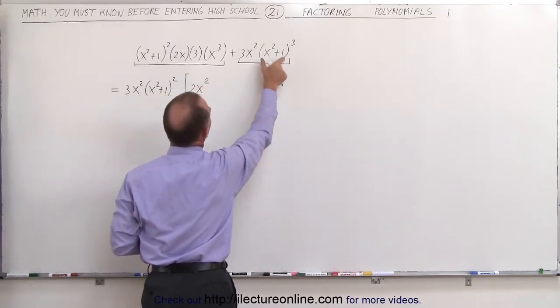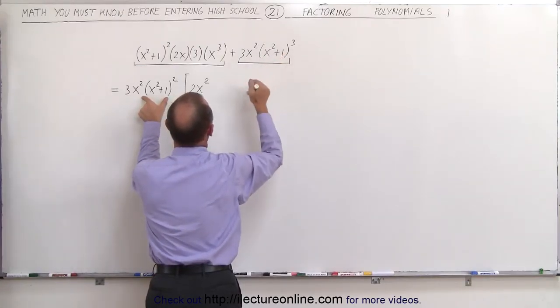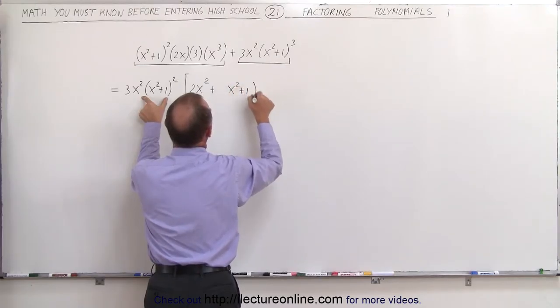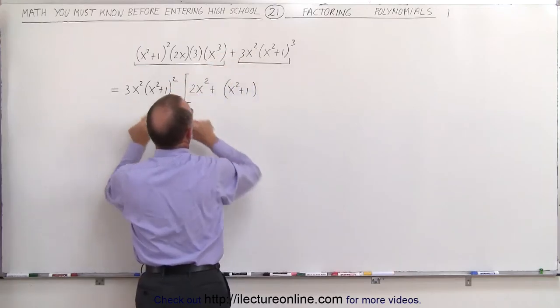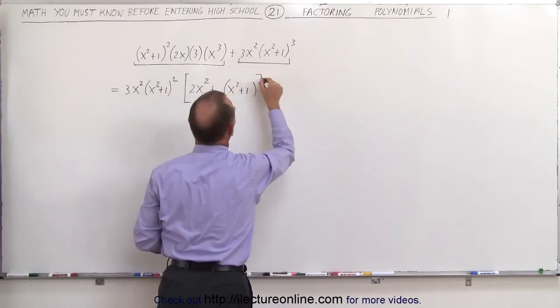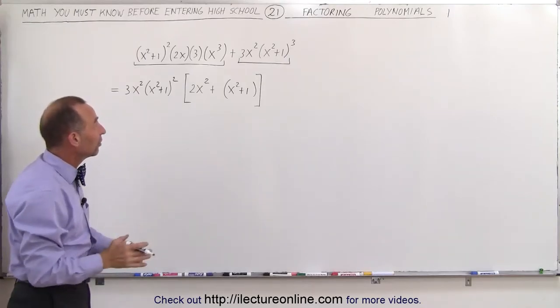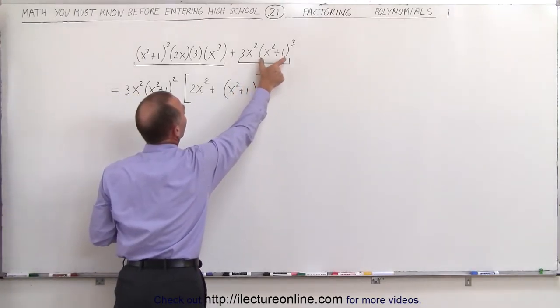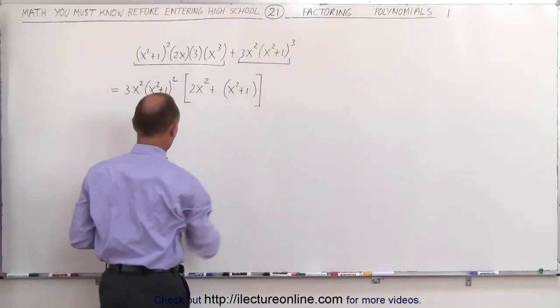Over here notice we have an x squared plus 1 cubed, we only took out an x squared plus 1 squared, so we're left with an x squared plus 1. And I factored out a 3x squared so the 3x squared is gone, so this is the only thing that's left. I intentionally put parentheses around it not that it was necessary, but to show you that when I factor out an x squared plus 1 squared I'm left with x squared plus 1 to the first power.